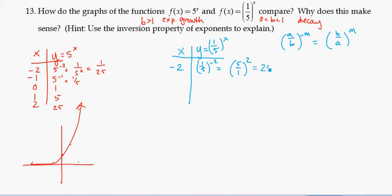So this is going to be 25. When x is negative 1, I'm going to get 5 by the same sort of logic. And so what happens is we actually just get all of the, what was negative 2's value is now positive 2's value. What was negative 1's value is positive 1's value.